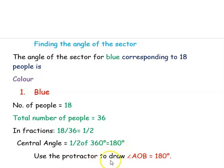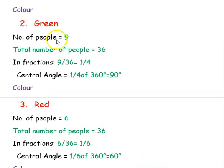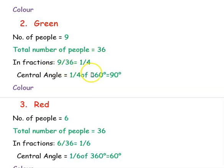Now we have to use the protractor to draw this angle. The second color is green, preferred by 9 people. The total number of people is 36. To find the fraction, we write 9 divided by 36, that is 1 divided by 4. The central angle is 1 by 4 of 360 degrees, which is 90 degrees.